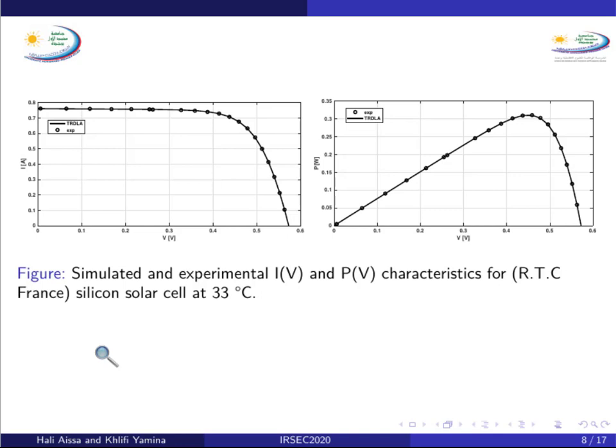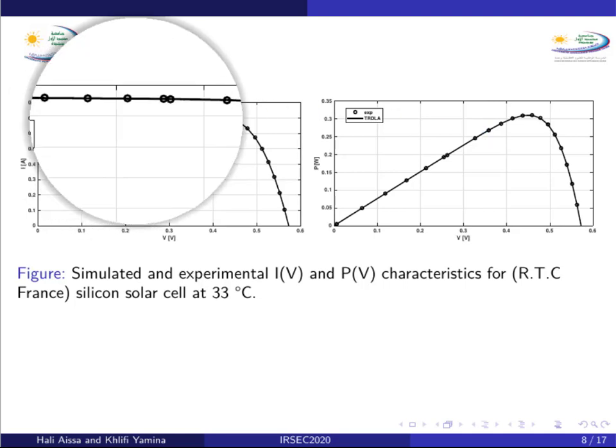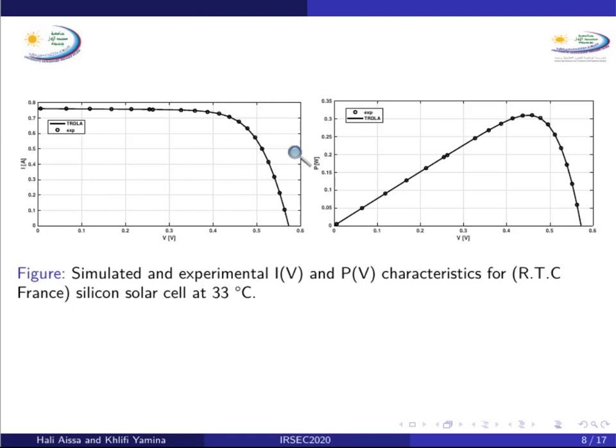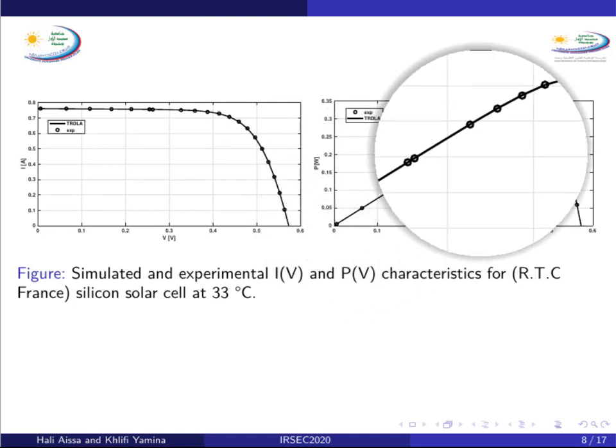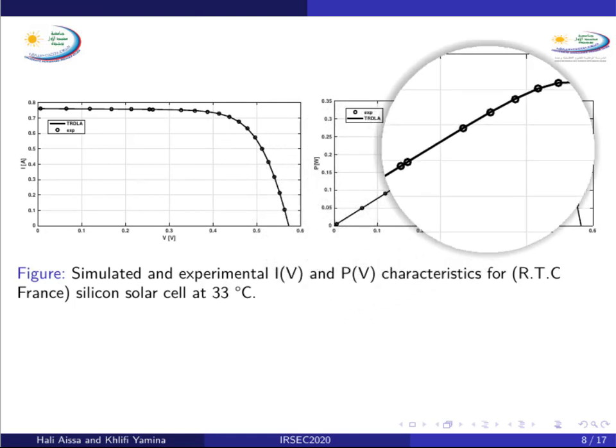These figures represent the comparison between experimental data and the calculated current-voltage and power-voltage characteristics. Considering the optimized set of extracted parameters, the obtained results show good agreement between experimental data and simulated current-voltage curves.